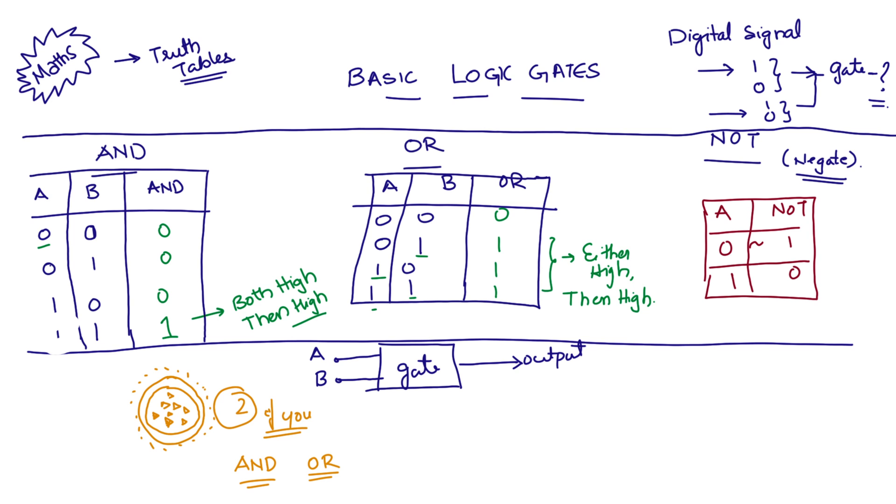Remembering the truth tables is very simple. For the output to be on or high for the AND gate, all the inputs have to be high. For the OR gate, only one input needs to be high. And the NOT gate or negate is only going to do the opposite of what the input is.